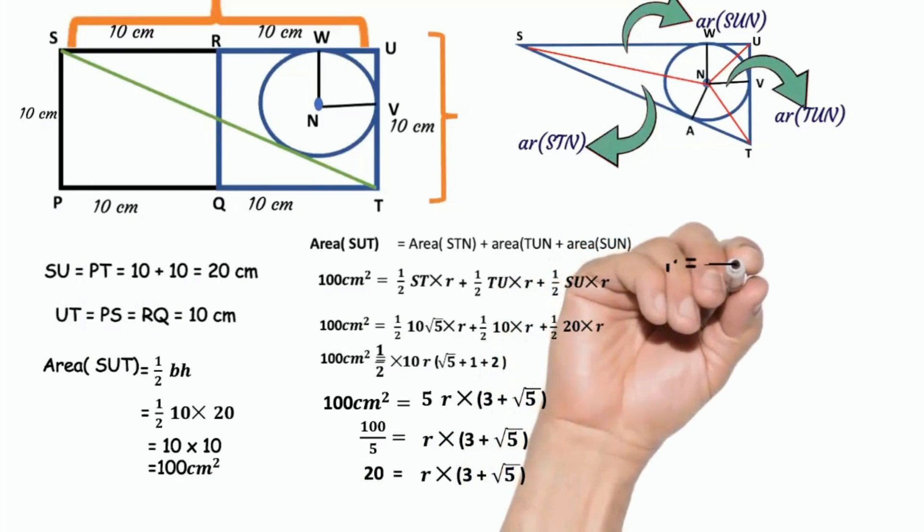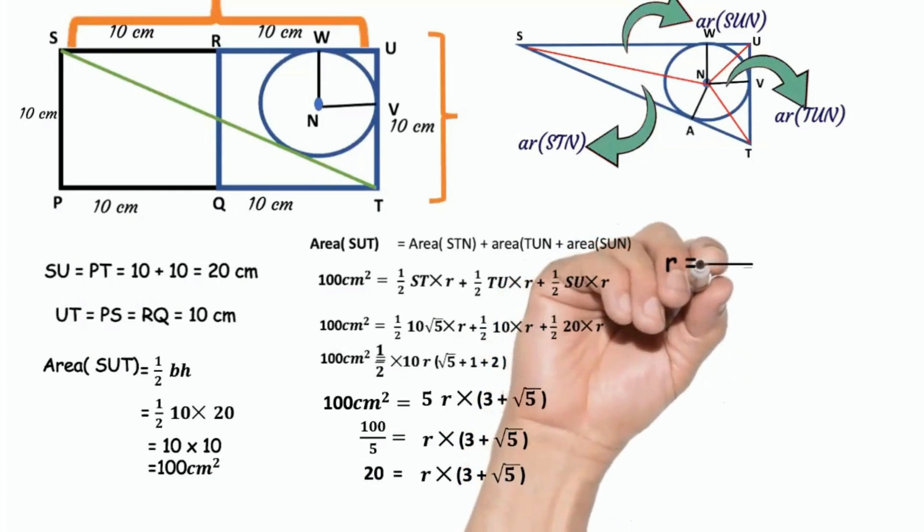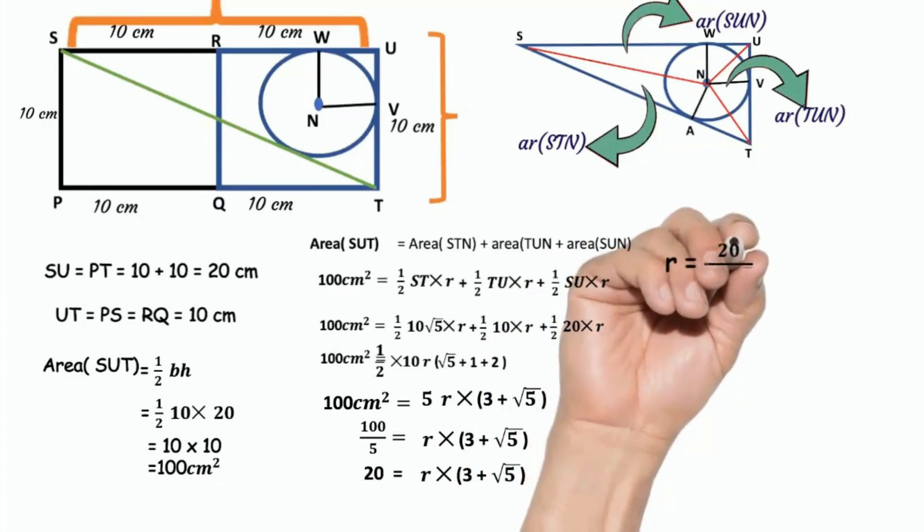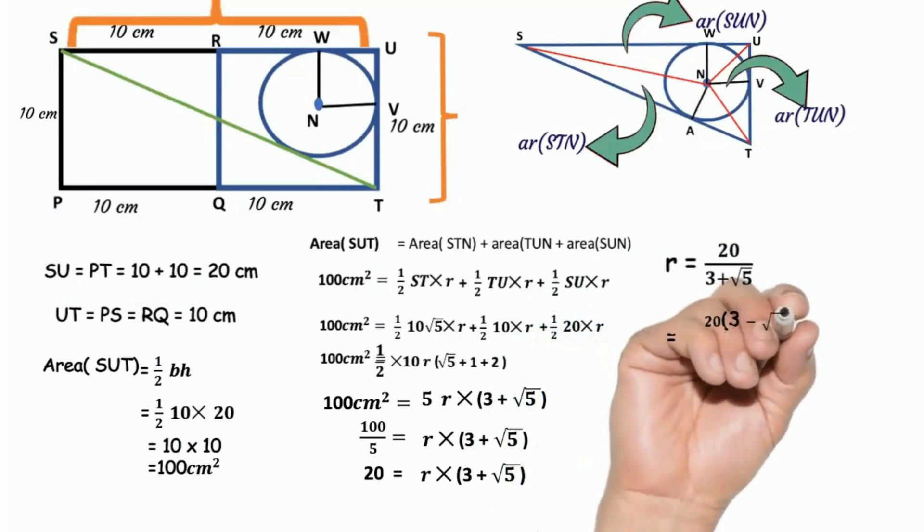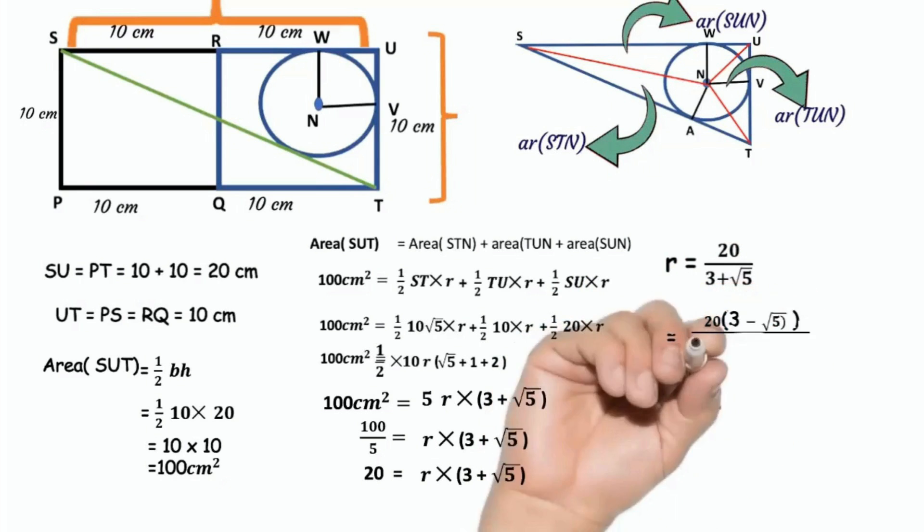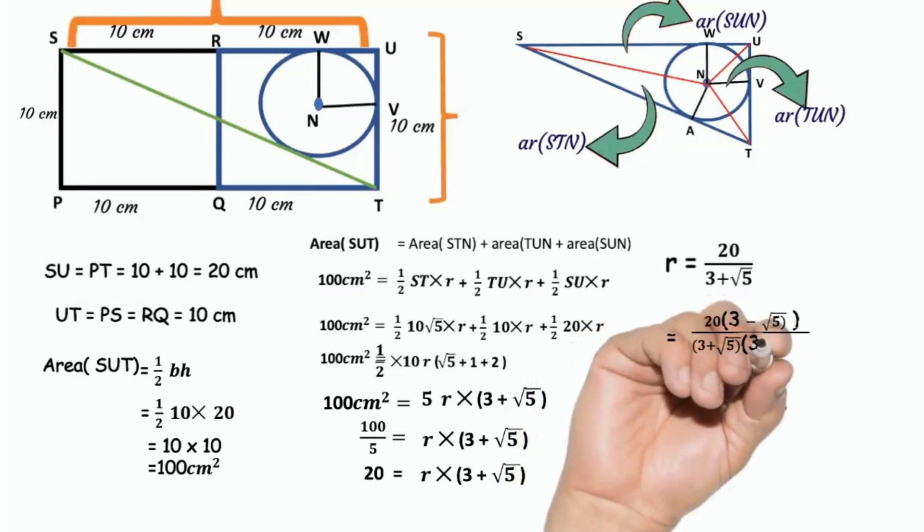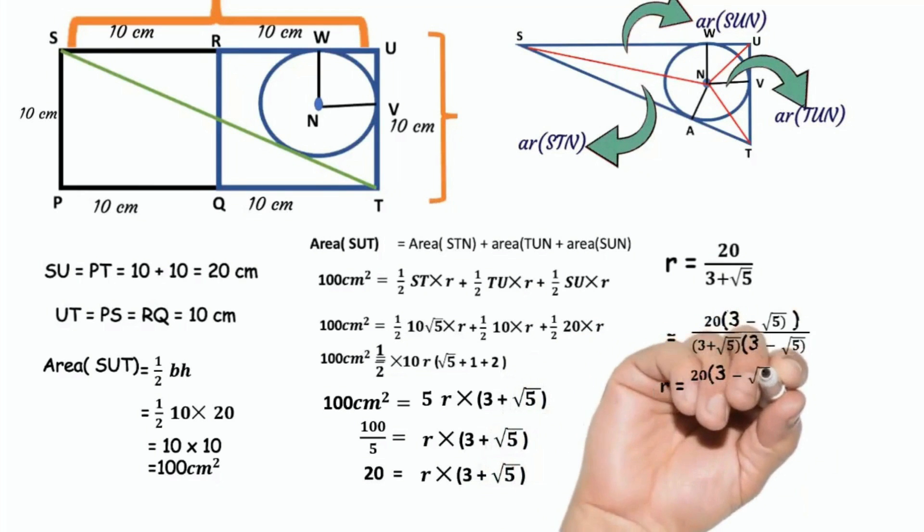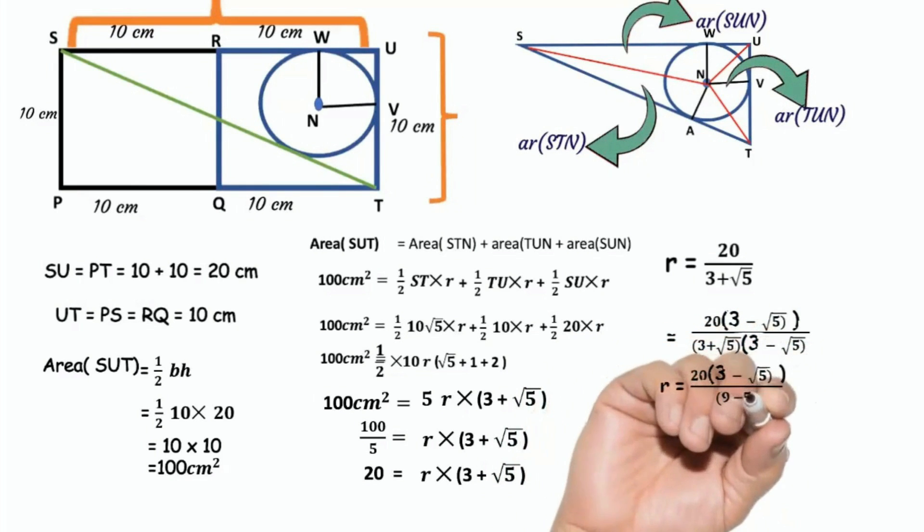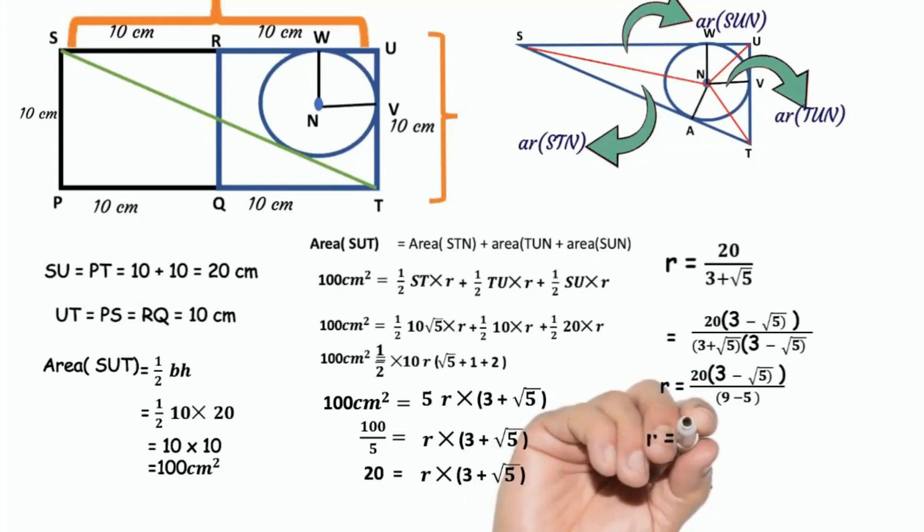Therefore R equals 20 divided by 3 plus root 5. Denominator is irrational, let's rationalize. Rationalizing factor is 3 minus root 5. Equals 20 into 3 minus root 5 divided by 3 plus root 5 into 3 minus root 5. So we get 20 into 3 minus root 5 divided by 9 minus 5. After using identity A square minus B square, 9 minus 5 is 4. R equals 20 into 3 minus root 5 divided by 4.